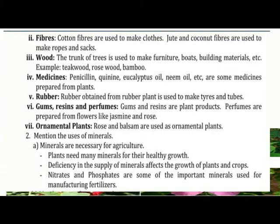Rubber obtained from the rubber plant is used to make tyres and tubes. Gum and resin are plant products. Perfumes are prepared from flowers like jasmine and rose. Ornamental plants: Rose and balsam are used as ornamental plants.